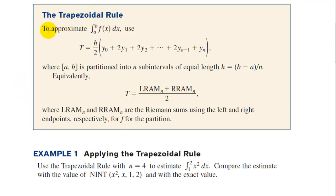Here's the trapezoidal rule according to the book. To approximate the integral from a to b of f of x dx, use h over 2 times the first y and the last y, which are only used once, and then here are the middle y values, which are used twice. That's why you see a 2 in front of all of them. Where a to b is partitioned into n subintervals of equal length, h equals b minus a over n.